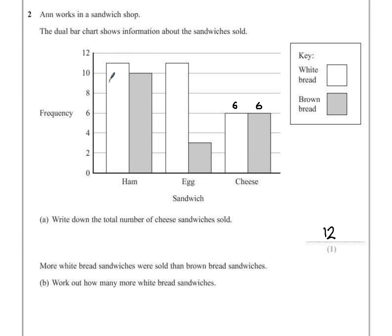Starting with ham, we can see that the white bread bar is somewhere between 10 and 12, meaning that must be 11 sandwiches. For the brown bread, that would be 10.